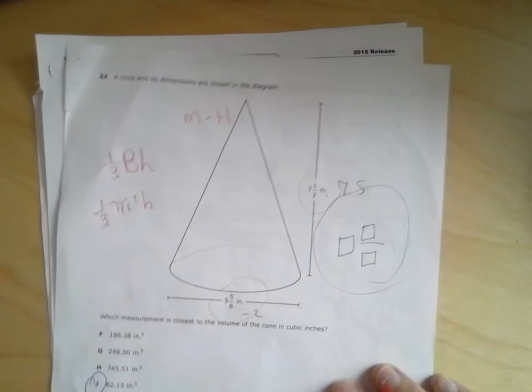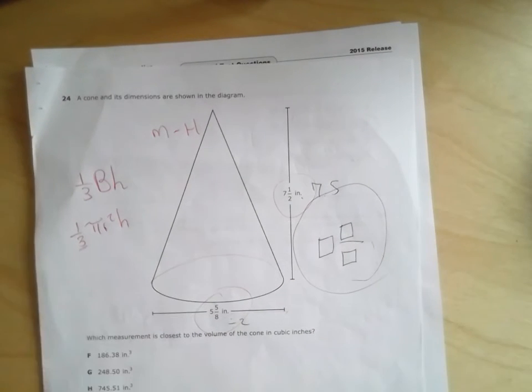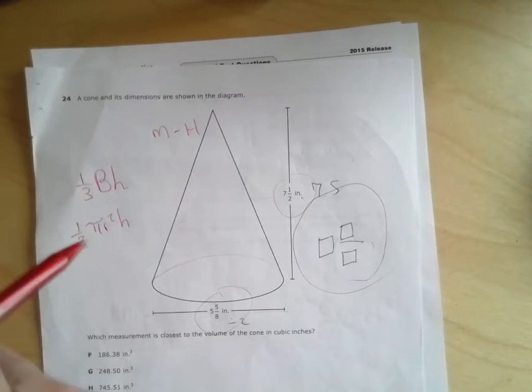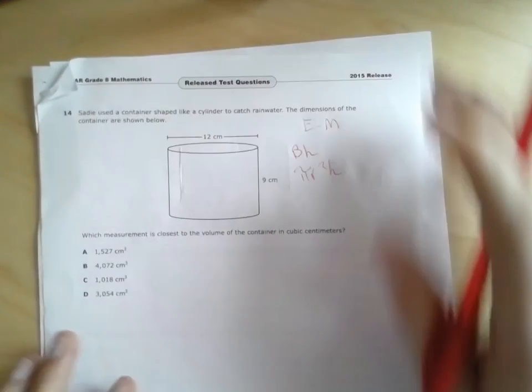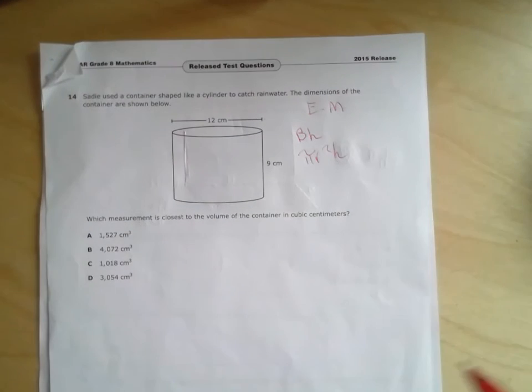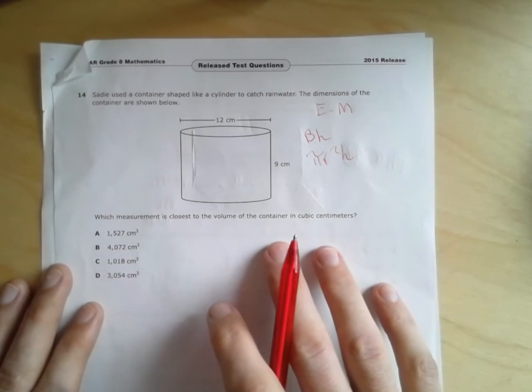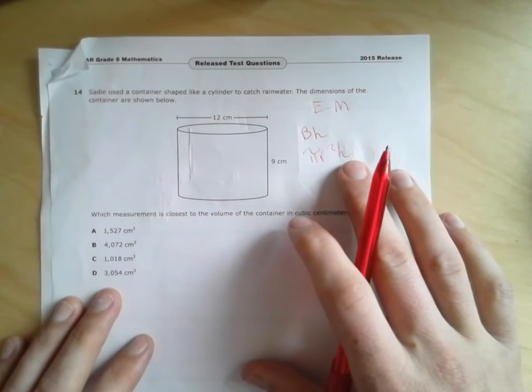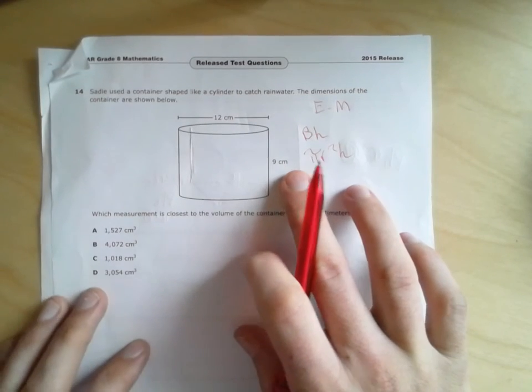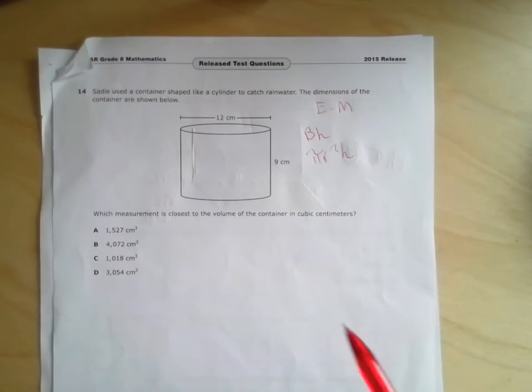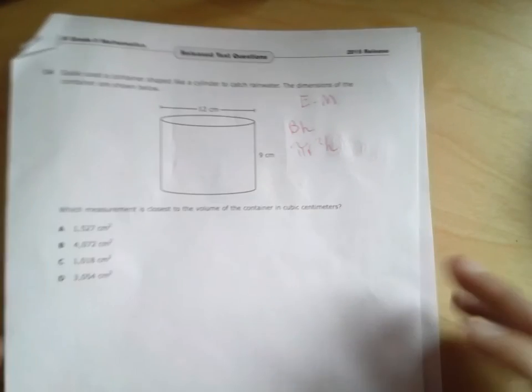And you can compare that problem to this problem, where it's very much the same content, or the same type of problem. It's volume, but this time it's volume of the cylinder, so you don't have a one-third. And even though they gave you the diameter, they gave you whole numbers, so it's an easier version of a volume problem. It might not prove to be as difficult.